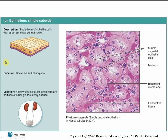Simple cuboidal epithelial tissue consists of a single layer of cube-shaped cells that function in secretion and absorption, found in places like the kidney tubules and some small glands. We have just a single layer of these little cuboidal or box-shaped cells.